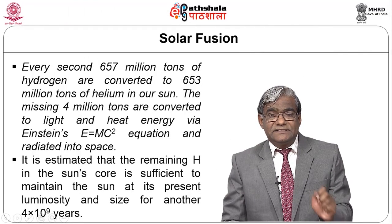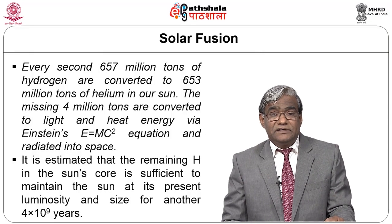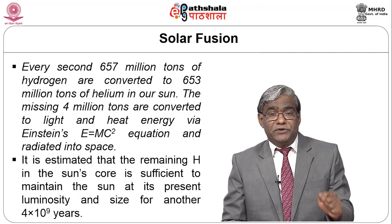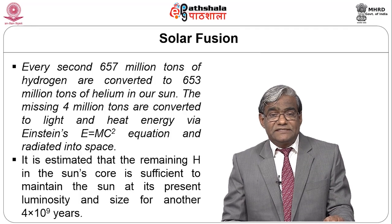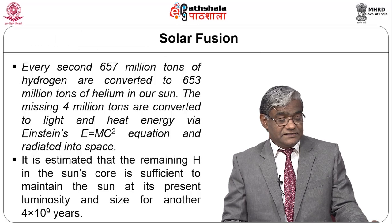Every second, 657 million tons of hydrogen are converted to 653 million tons of helium in our sun. The missing 4 million tons are converted to light and heat energy via Einstein's equation and radiated into space. It is estimated that the remaining hydrogen in the sun's core is sufficient to maintain the sun at its present luminosity for another 4 × 10⁹ years.